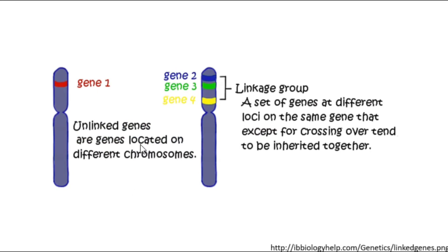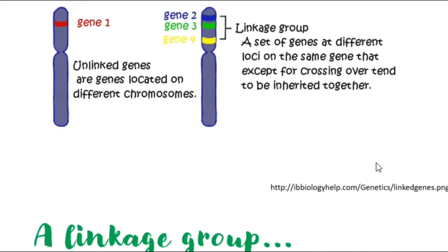The first chromosome contains only gene 1, so it obviously doesn't have a linkage group, because recall from our previous video that in order for linkage to occur there should be at least two genes. For the second chromosome, the linkage group shows that genes 2, 3, and 4 tend to be inherited together, except in cases when there is crossing over.